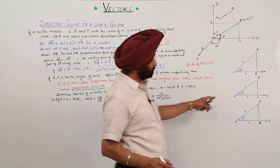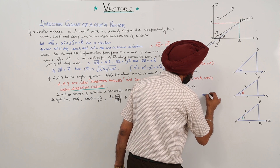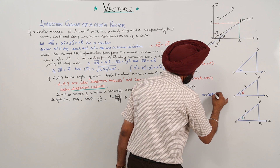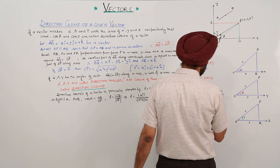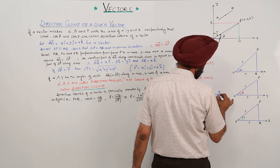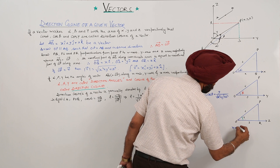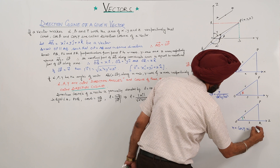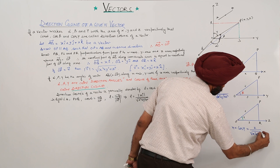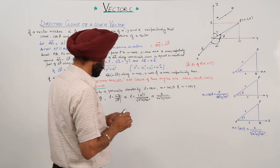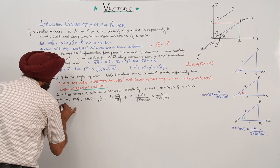Similarly, M equals cos beta, and this is equal to Y upon the square root of X squared plus Y squared plus Z squared. And N equals cos gamma, which is equal to Z upon the square root of X squared plus Y squared plus Z squared.